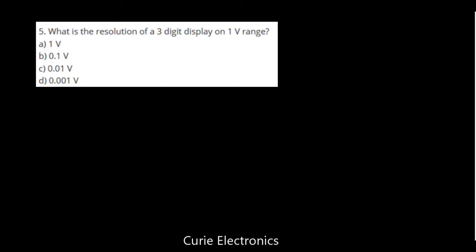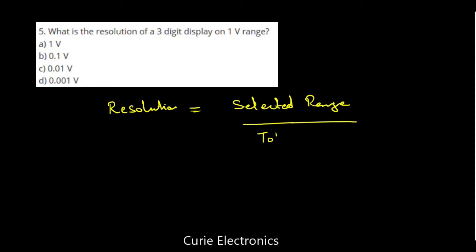What is the resolution of a 3 digit display on a 1 volt range? Resolution equals selected range upon total count — that is 1 volt upon 1000 (since a 3 full digit display counts from 0 to 999, total count equals 1000). So the resolution equals 0.001.